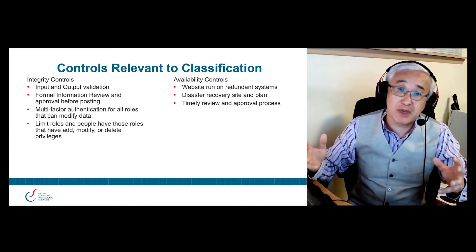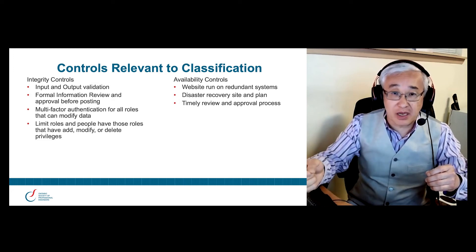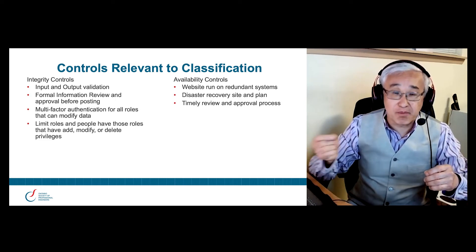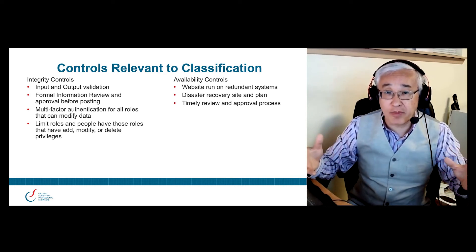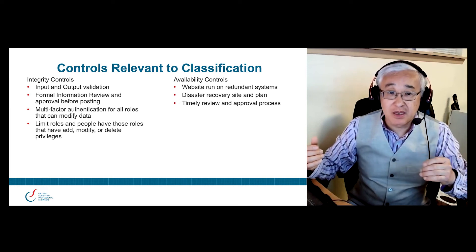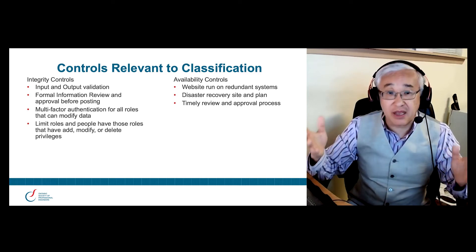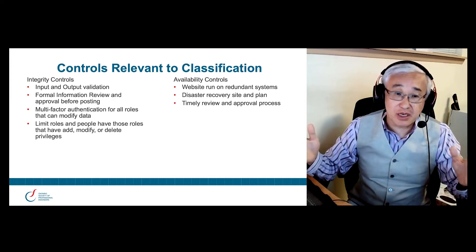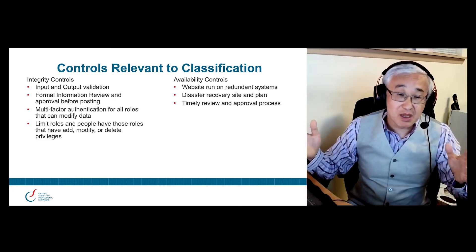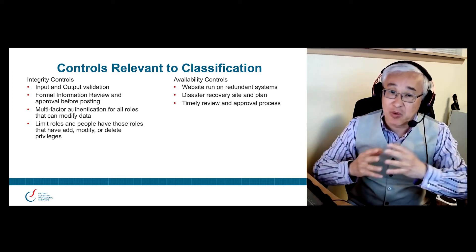Input validation means that as information flows into the website, there's code in the website that asks: does this information make sense? Is the information formatted correctly? For example, if it's a dollar value, there should be a dollar sign in front of it. Does the range make sense? If we're talking about First Nations communities, I wouldn't expect a population to be over, say, 10 million people. So if a population size of 24 million came in, that would be suspect and I'd want to check whether that information is truly valid.